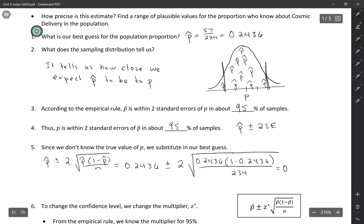So we end up with our sample proportion, 0.2436, plus or minus this amount. So if we work it all out, this comes out to be 0.0561.